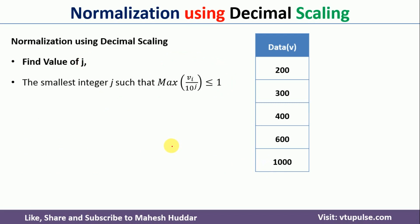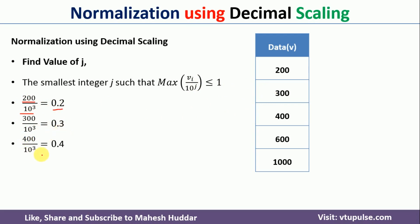We put this j value into the equation to get the normalized values. In the first iteration: 200 / 10^3 = 0.2. Next: 300 / 10^3 = 0.3. Then 400 / 10^3 = 0.4, 600 / 10^3 = 0.6, and finally 1000 / 10^3 = 1.0. These are the normalized values using decimal scaling for the given data points.